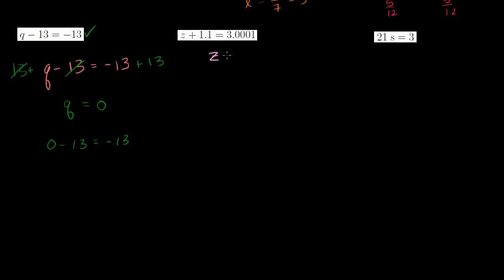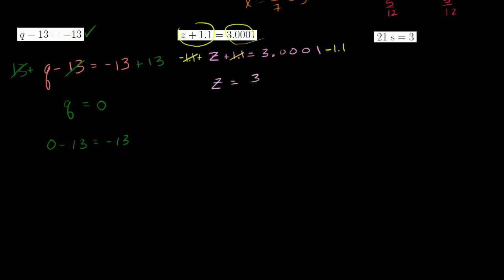Next: z plus 1.1 is equal to 3.0001. We want to get rid of the 1.1 on the left-hand side, so we subtract 1.1 from both sides. If I do it to the left I've got to do it to the right, otherwise the equality won't hold. Subtracting 1.1 from z plus 1.1 leaves just z, equal to 3.0001 minus 1.1.